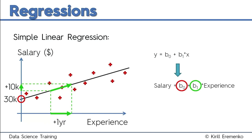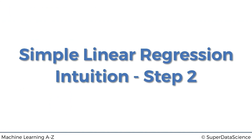That's pretty much how simple linear regression works. The core goal is that we're not just drawing a line theoretically — we're actually using observations that we have to find the best fitting line. Today we'll find out how to find that best fitting line, or in fact how simple linear regression finds that line for you.